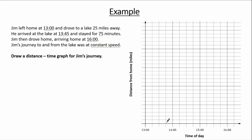Moving on to the distance axis: Jim travels to a lake 25 miles away, so he starts at 0 miles and goes up to 25 miles. The scale goes up in steps of 5: 5, 10, 15, 20, and 25. Between each pair of labelled values there are 5 steps, so each step is worth 1 mile.